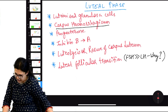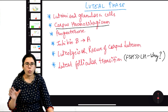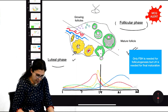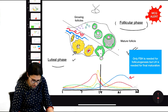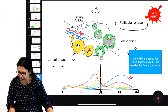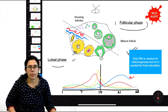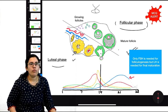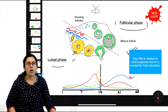As progesterone is released, we get peak progesterone concentration at around the 8th day post-ovulation — this is an important MCQ. Another important question: when is maximum activity of corpus luteum? Answer: 8th day post-ovulation, when there is peak progesterone concentration.